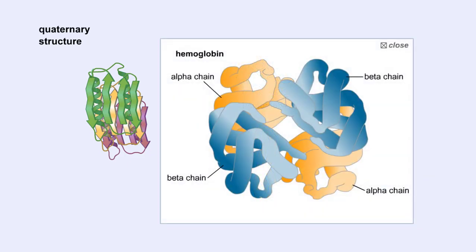Hemoglobin is an example of a protein that exhibits quaternary structure. It consists of two identical alpha chains and two identical beta chains. These chains are referred to as subunits.